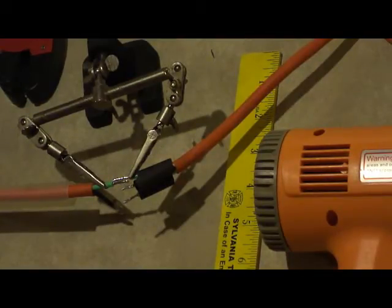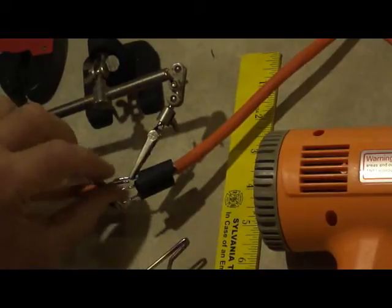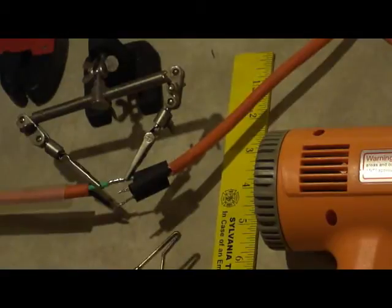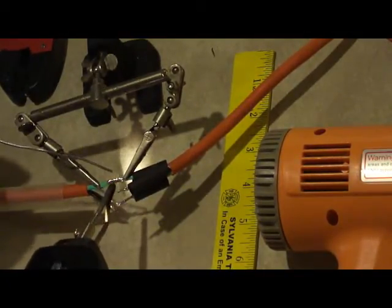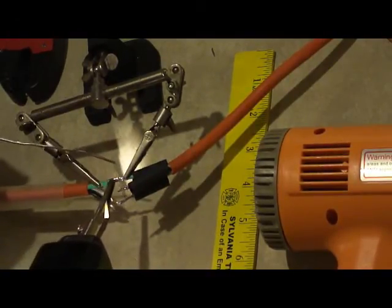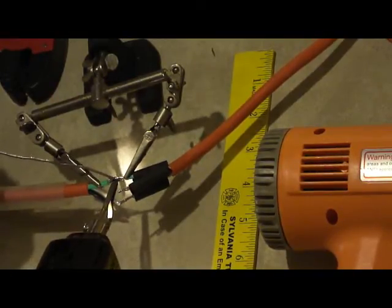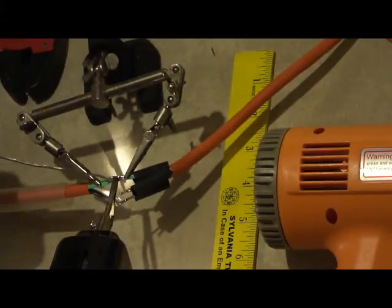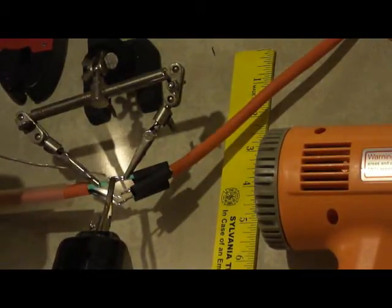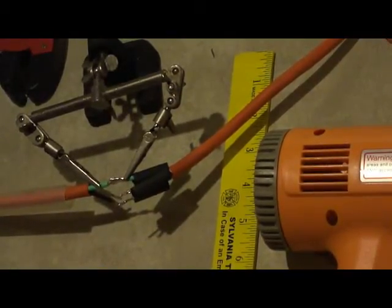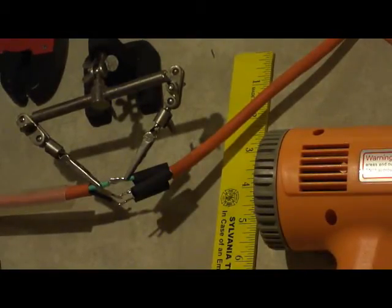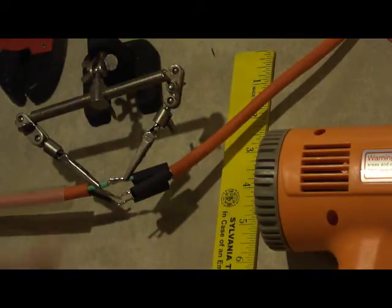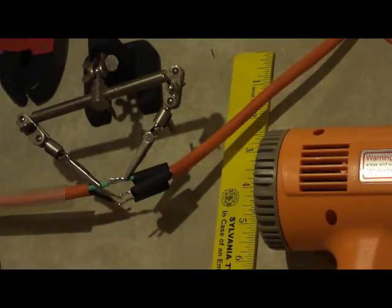I'm just going to solder these. You notice that this alligator clip also acts as a heat sink. I think I got a little solder on here. You can see that we're going to be doing the same thing to the other two wires. So I'm going to pause this and then we'll continue on with the other two wires done.